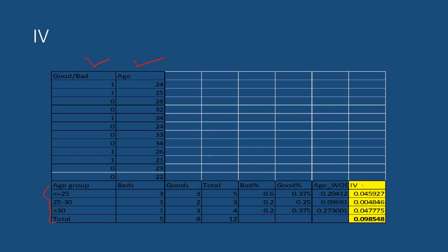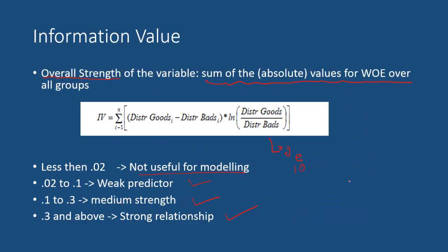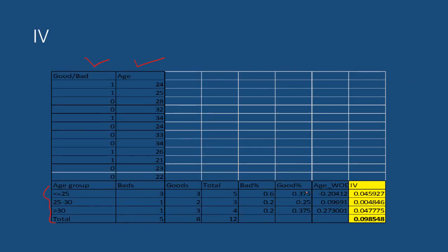Going by the formula, we take the difference of good percentage minus bad percentage and then multiply it by the WOE value, since the log of distribution of goods by distribution of bads is nothing but the WOE value. For the first group the IV contribution is 0.04, for the next it is 0.004, and for the last it is 0.04 again. When we add these up, the cumulative information value for this variable is 0.0985.